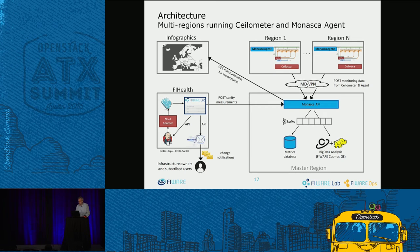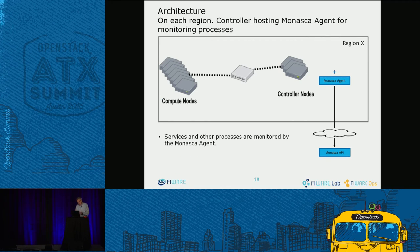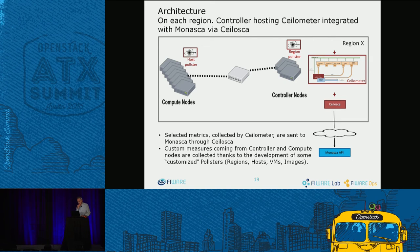Going deeper into the regional detail: each region has controller and compute nodes with a Monasca agent installed. This is for monitoring specific processes and services, and also for integrating pre-existing monitoring systems - through the Monasca agent, data from pre-existing systems can be sent to the Monasca API. Ceilometer is installed on each remote region, and Ceilosca is used to retrieve data from Ceilometer and forward it to the Monasca API.